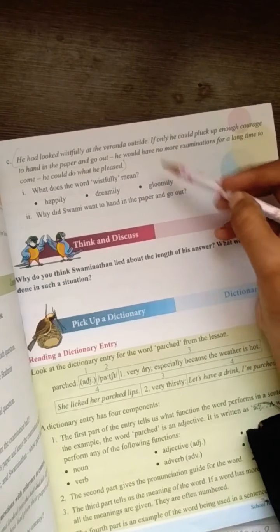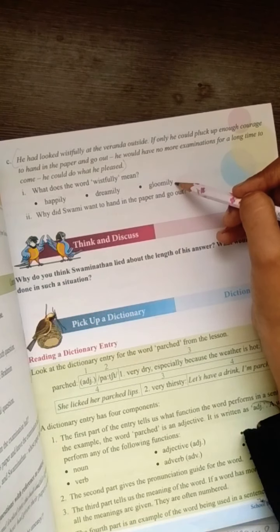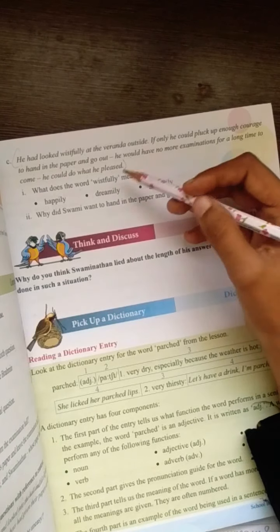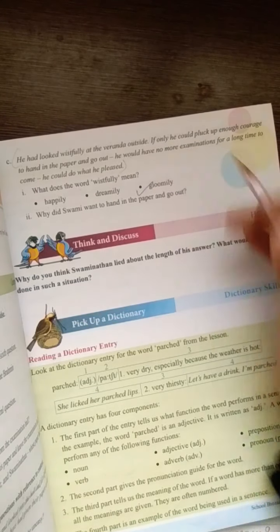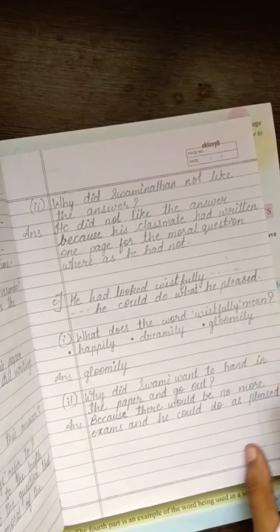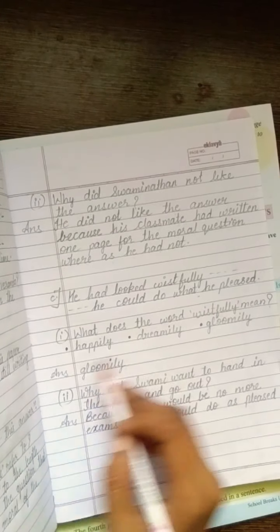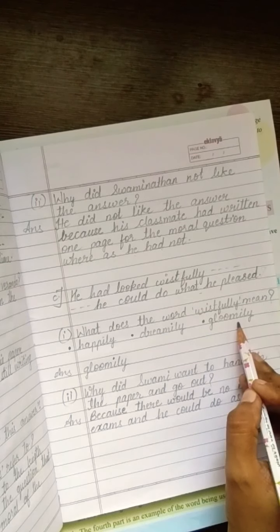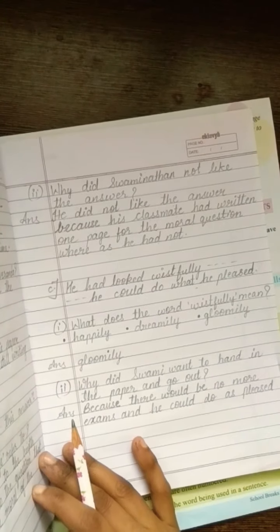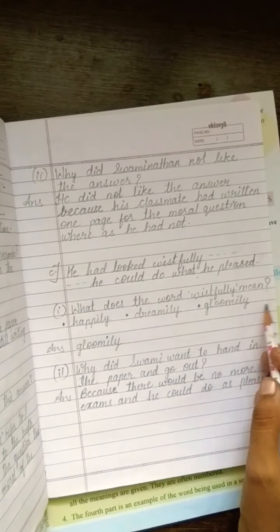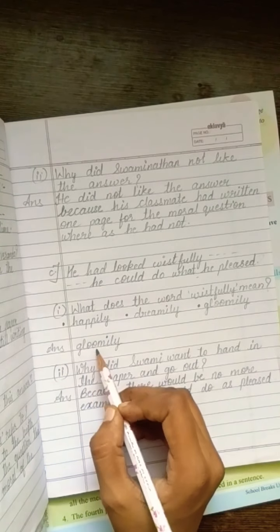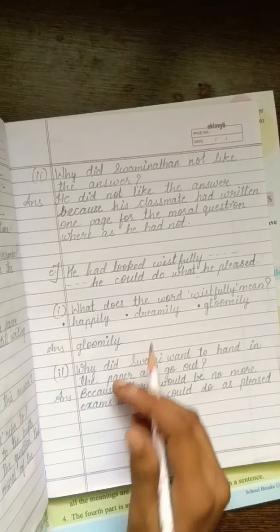What does the word wistfully mean? Happily, dreamily or gloomily? So, tell me students, Wistfully ka meaning kya hai yahan? Gloomily. How are you going to write? See in your CW book. You are going to write the question with three examples or you can say with three options and write the answer. Gloomily. G-L-O-O-M-I-L-Y Gloomily.